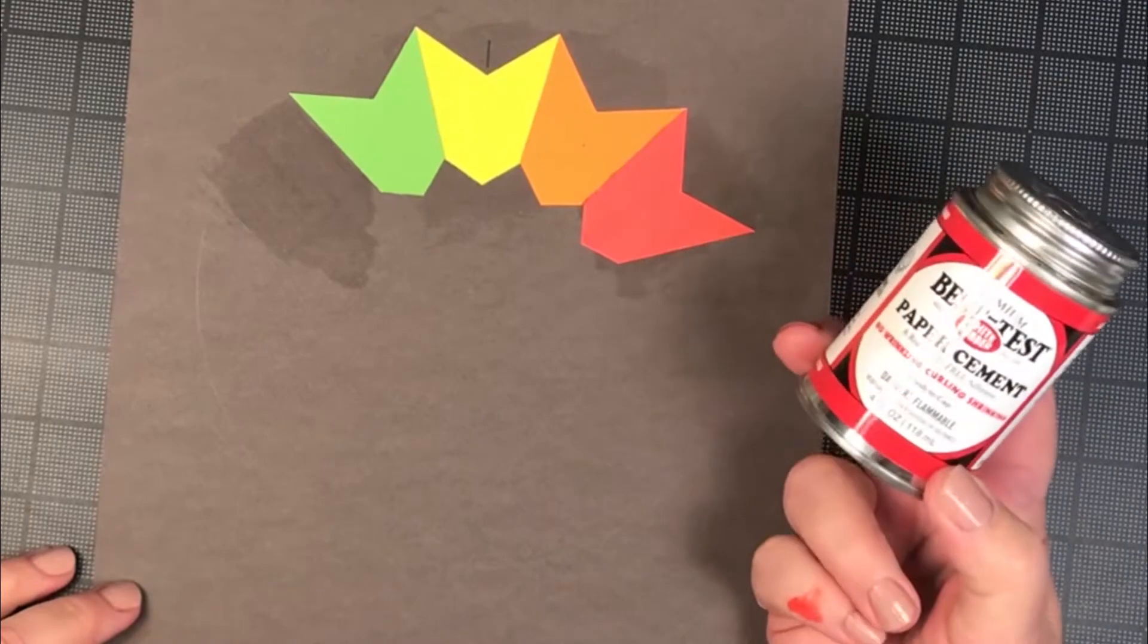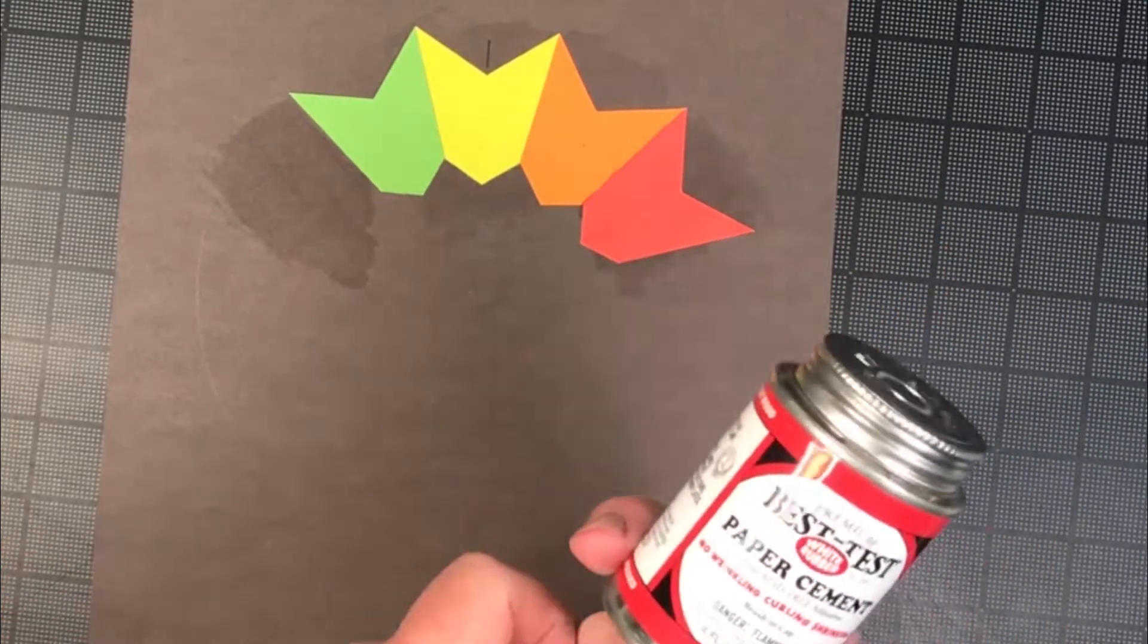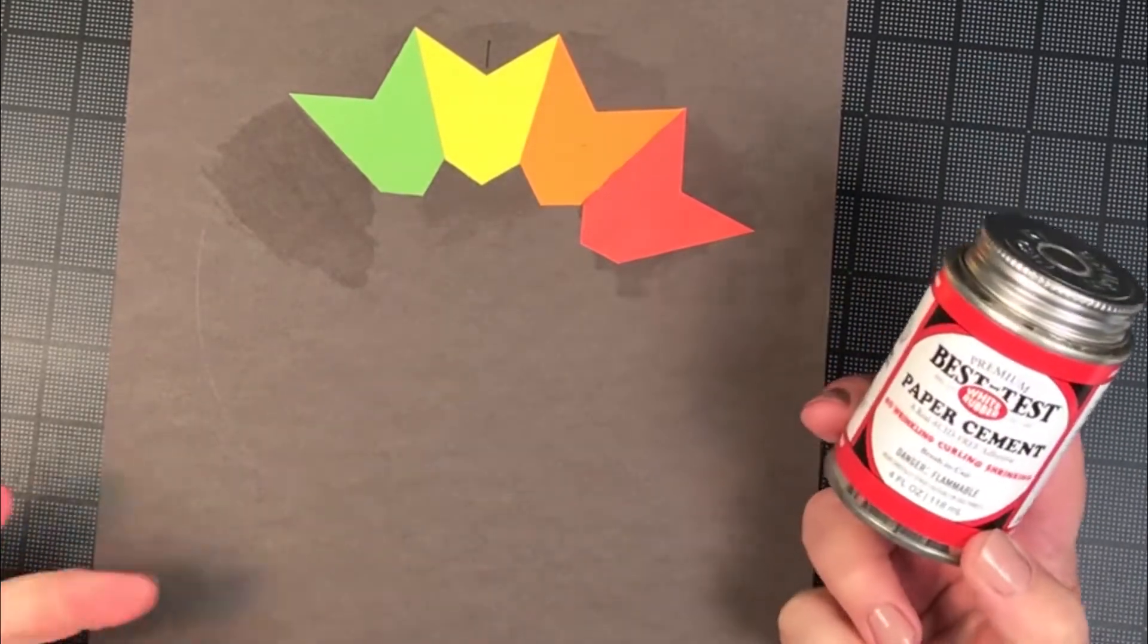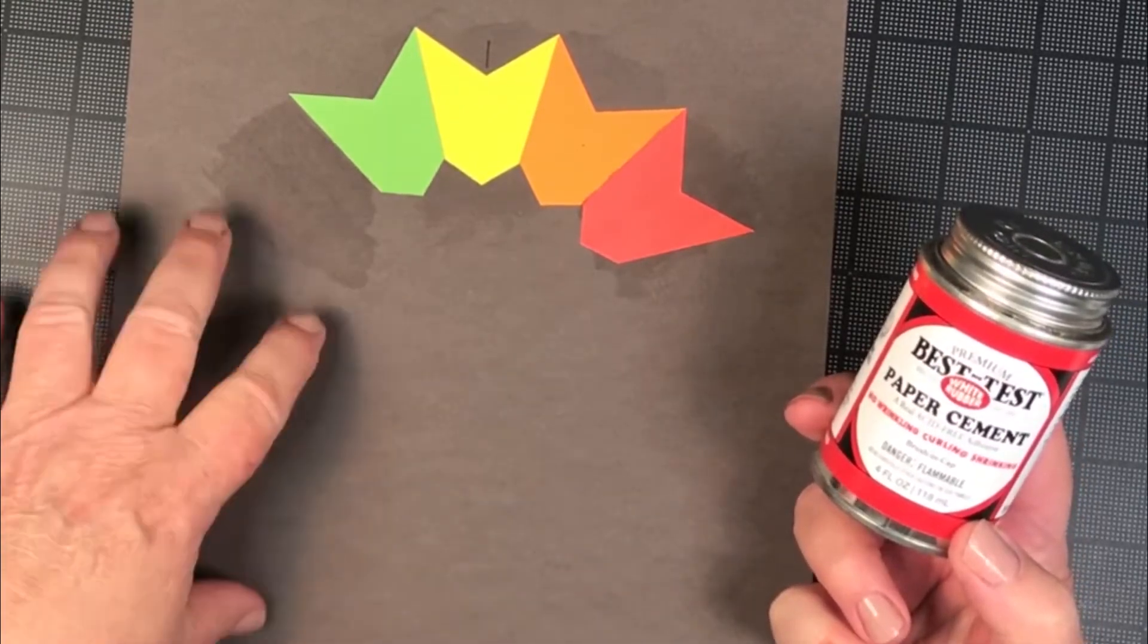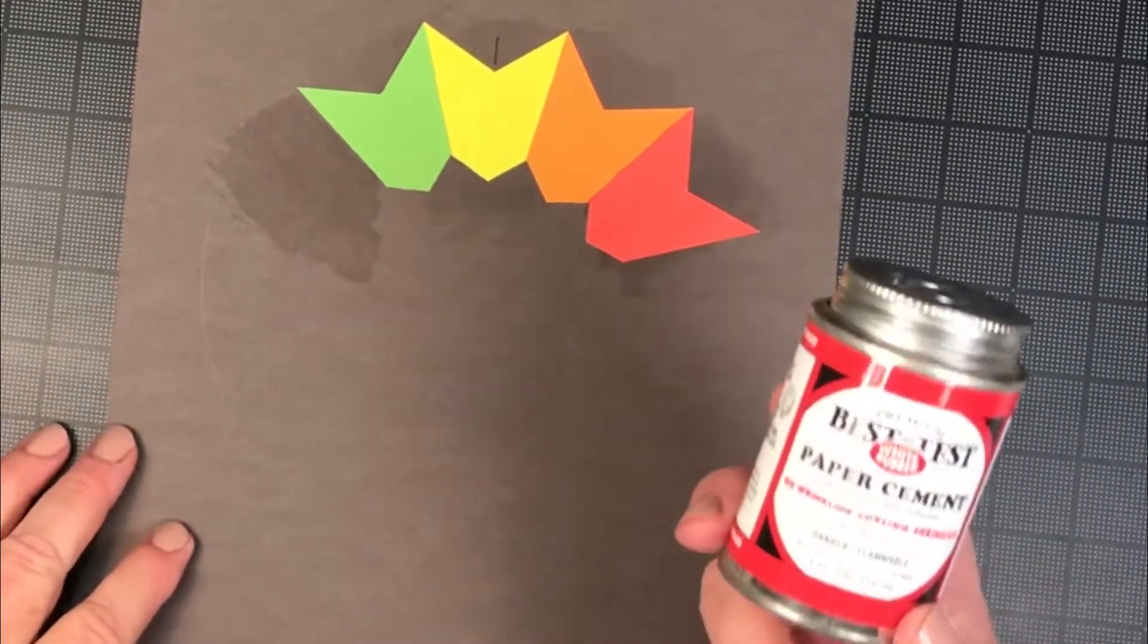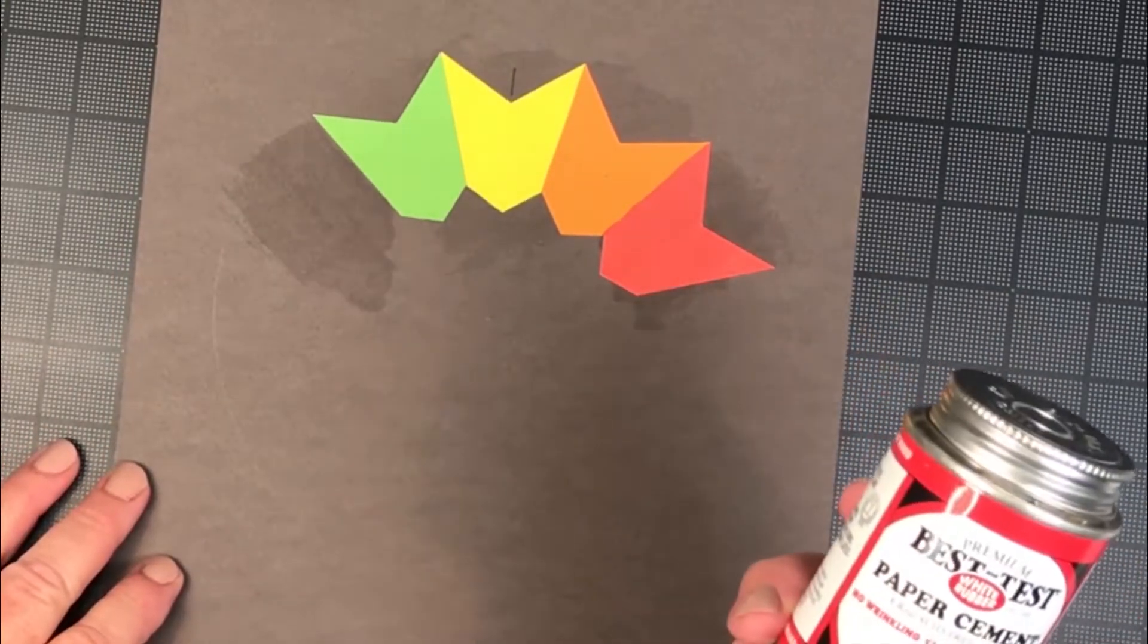Rubber cement or paper cement is how you are going to adhere or cement the swatches to the paper. The reason we use this is so that you can remove and replace.